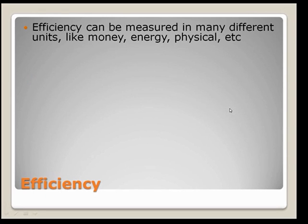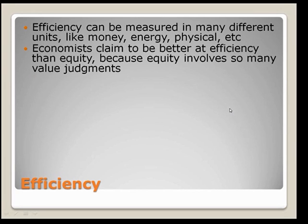Efficiency can be measured in many different units — money, energy, physical, etc. Economists claim to be better at efficiency than equity, because equity involves so many value judgments. If I were to say whether something's fair or not, there are so many different ways to value that — economists really don't have a corner on the market. Whereas efficiency seems like a very technical thing: I can simply say there are 250 bushels per acre now and there used to be 150, so that's purely efficiency, and it's not about equity.